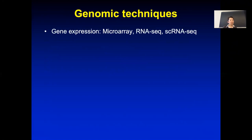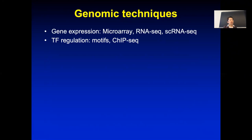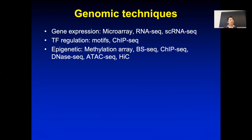Based on that, we have many different genomic techniques. We talk about gene expression from RNA — microarray, RNA-seq, single-cell RNA-seq. We talk about transcription factor regulation, looking at transcription factor motifs and doing TF ChIP-seq. We talk about epigenetics: DNA methylation arrays looking at selected CpG locations, bisulfite sequencing, ChIP-seq, DNASE-seq, and ATAC-seq.